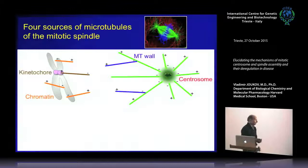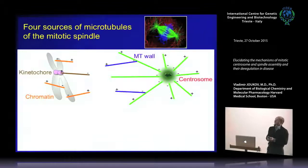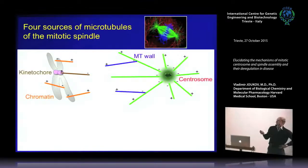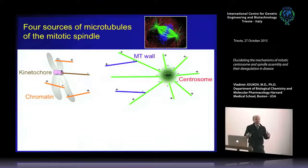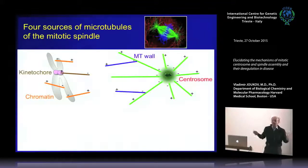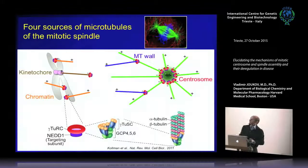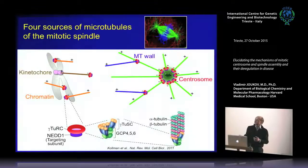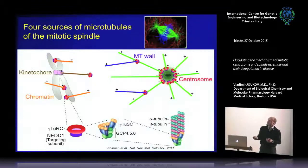Despite many years of study, we know very little about spindle assembly and are just at the beginning of understanding this complex process. What we know today is that microtubule formation occurs at four major sites: chromatin, centrosomes, kinetochores, and microtubule walls. The mechanisms by which microtubules are formed at all four sites differ; however, what is common is that microtubule nucleation involves the same factor, the gamma-tubulin ring complex, which serves as a template for nucleation of alpha-beta-tubulin heterodimers. This factor is targeted to spindle assembly centers through its targeting subunit called NED1.